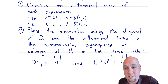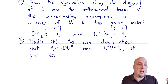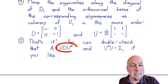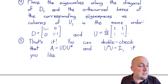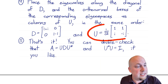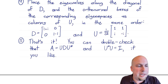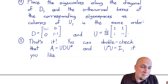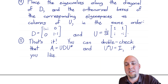If you like, you can double-check: compute UDU* using this U and D and verify that you get back the matrix A you started with. Also, it's not obvious that U is unitary, but you can verify that too by computing U*U and confirming it equals the identity matrix.